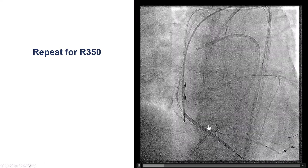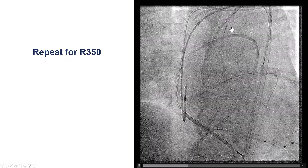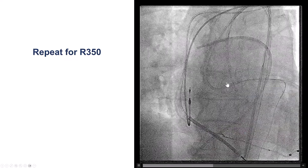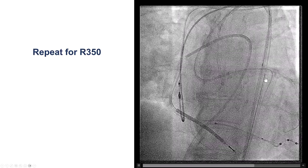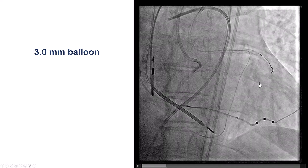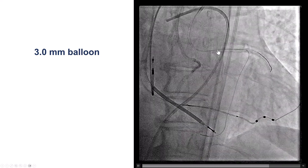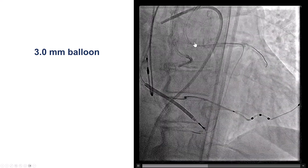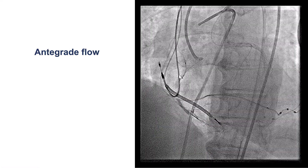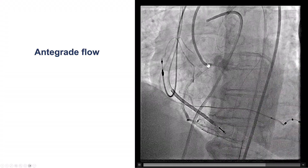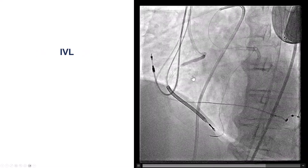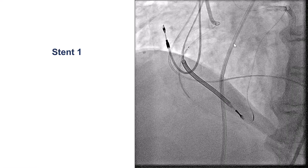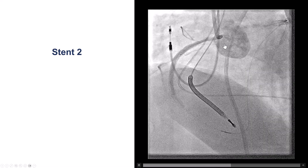We externalized the wire and got a microcatheter to go all the way into the antegrade catheter. We then removed the Confianza and switched to an R350, which unfortunately also came off and we had to snare it inside the guide catheter. But eventually we did have an externalized guidewire, providing us with exceptional support. We disengaged the retrograde guide and did balloon angioplasty of the proximal right coronary artery, which restored antegrade flow. There is still significant disease and some calcification, which is why we did intravascular lithotripsy and stenting of the right coronary artery with two overlapping drug-eluting stents.